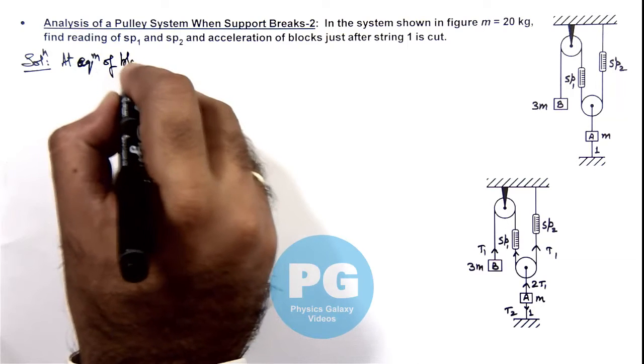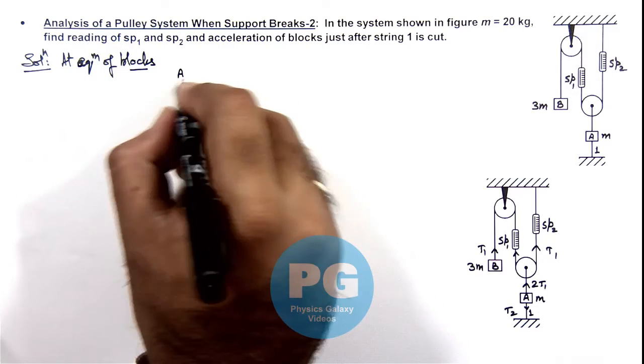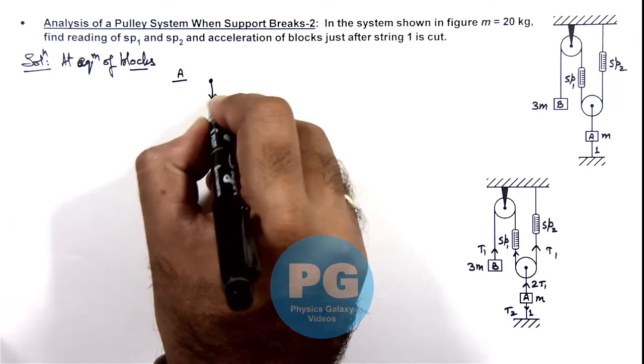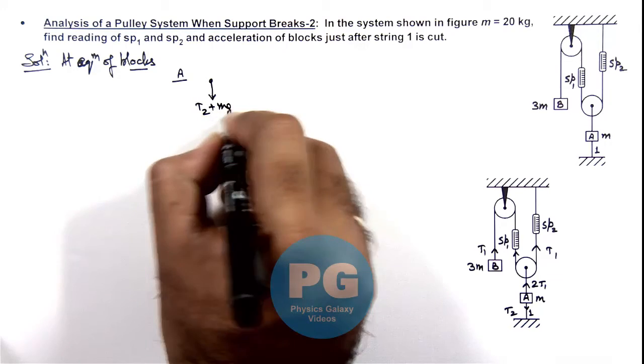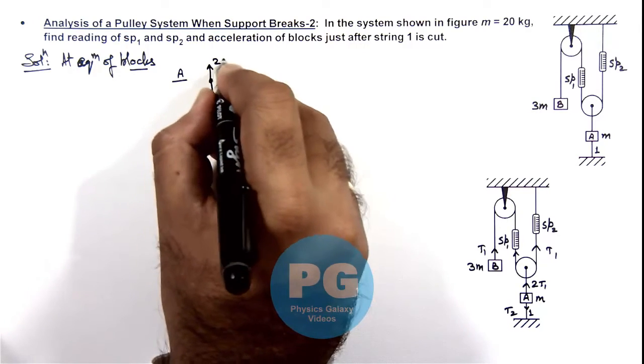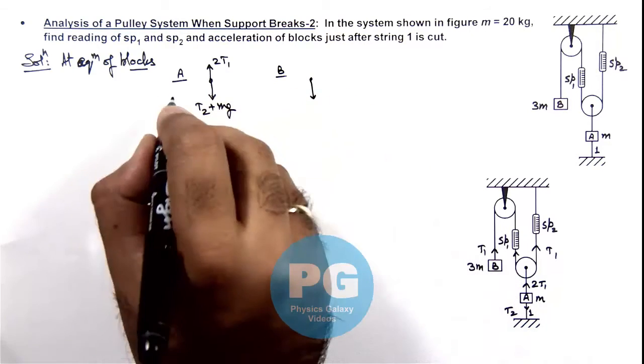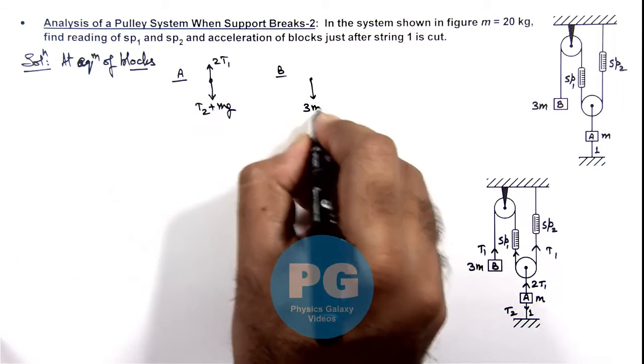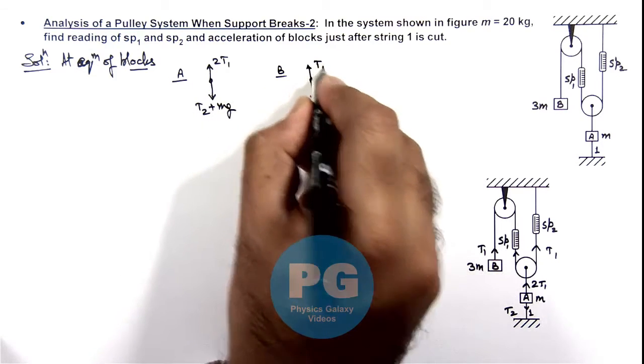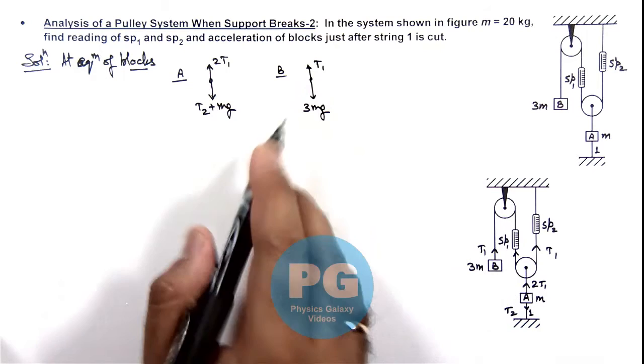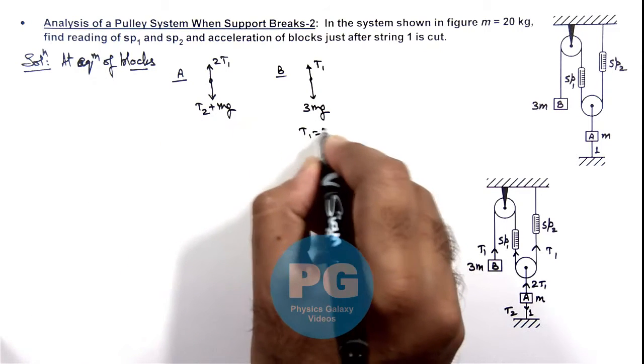We can see for block A, downward force on it is T2 plus its weight mg, and upward force on it is 2T1. At equilibrium all these forces are balanced, so the value of T1 is 3mg.